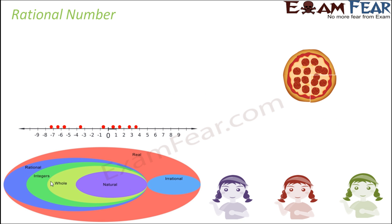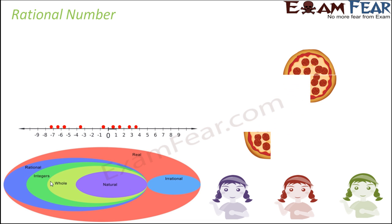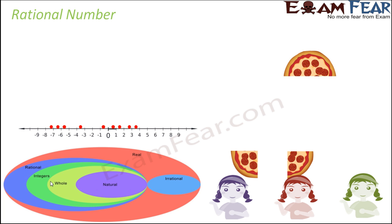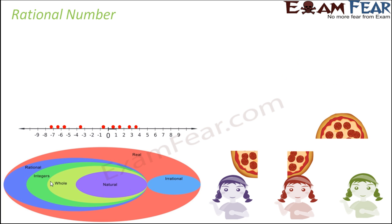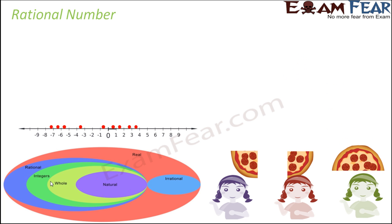Next came the concept of rational numbers. Let's understand why rational numbers are required. Let's assume that you have one pizza and this pizza is divided among three people — one, two, and three. Now tell me how much share each person got.